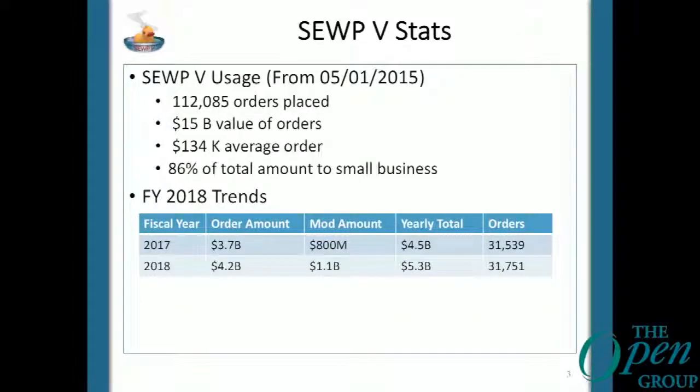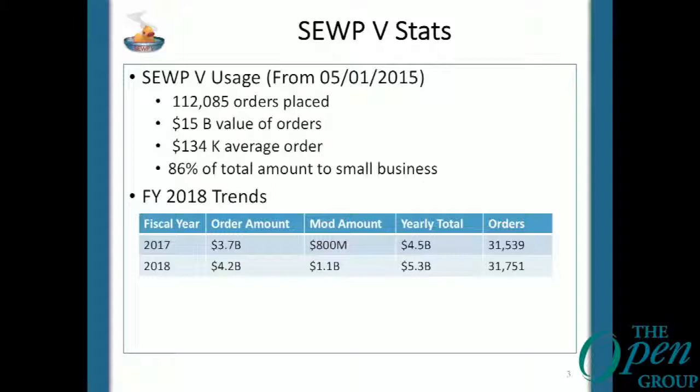We have an average order size that's been moving up. In previous versions of SUP we went from 50 to 60 to 75 thousand; we're now up to about $134,000. What that tells me is the bigger agencies are using us more and for more consolidated, more important buys — not just a laptop here, a desktop there, a cable there. From FY17 to FY18, we increased 17% in total business, which shows our outreach and industry partnerships are working.